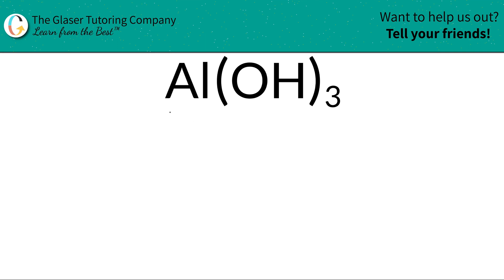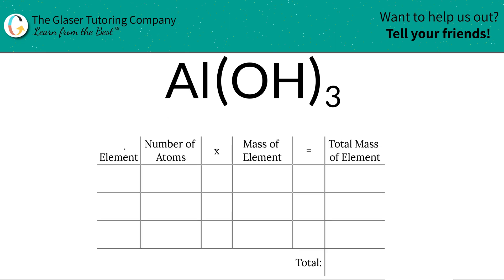Today we're going to find the molar mass of aluminum hydroxide. We're going to use this table to help organize our thoughts. The first thing I'm going to do is write down the elements in the compound: aluminum, oxygen, and hydrogen.